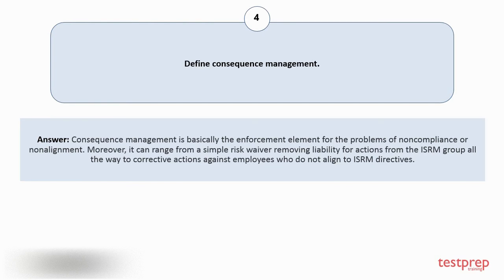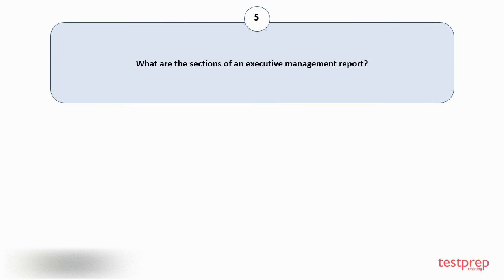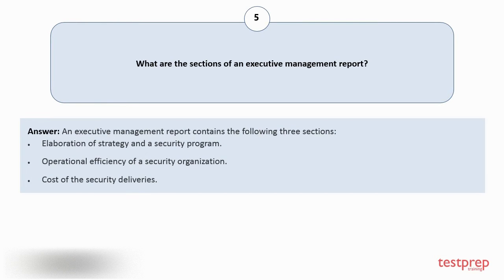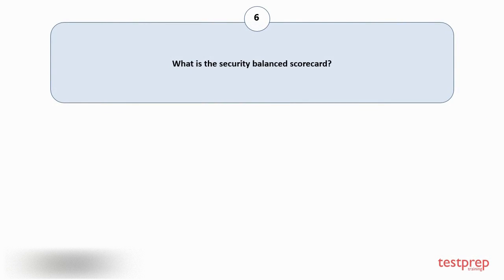Question number five: What are the sections of an executive management report? An executive management report contains the following three sections: one, elaboration of strategy and a security program; two, operational efficiency of a security organization; three, cost of the security deliveries. Question number six: What is the security balanced scorecard?